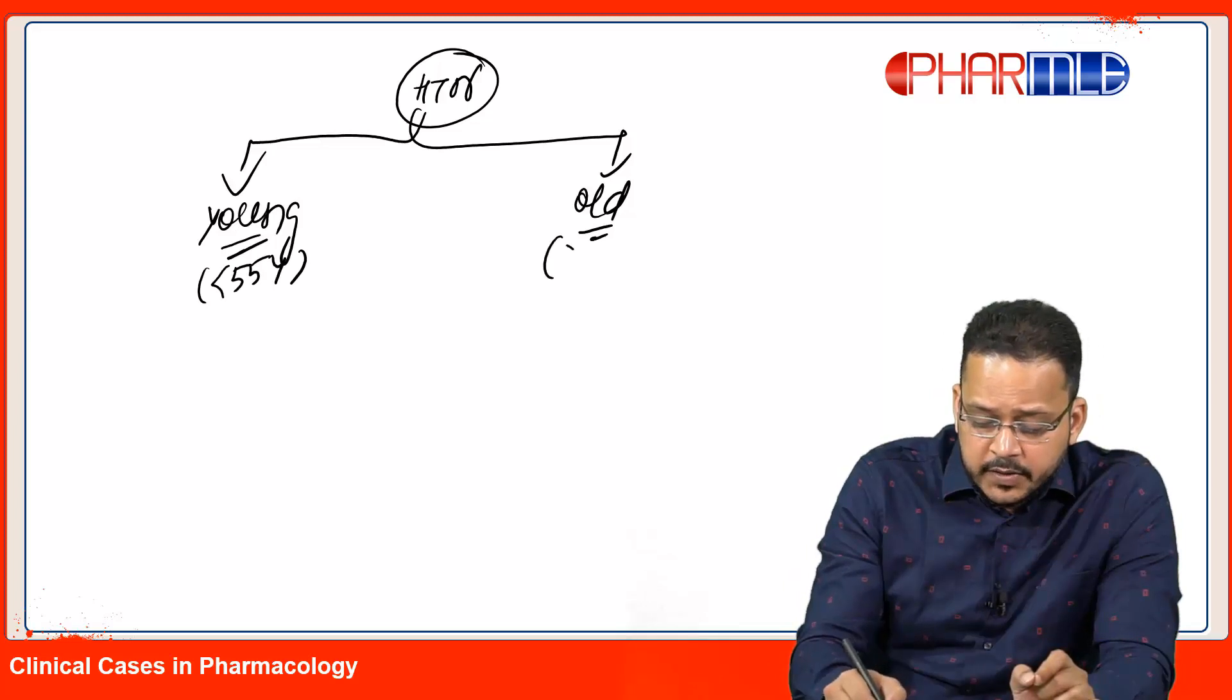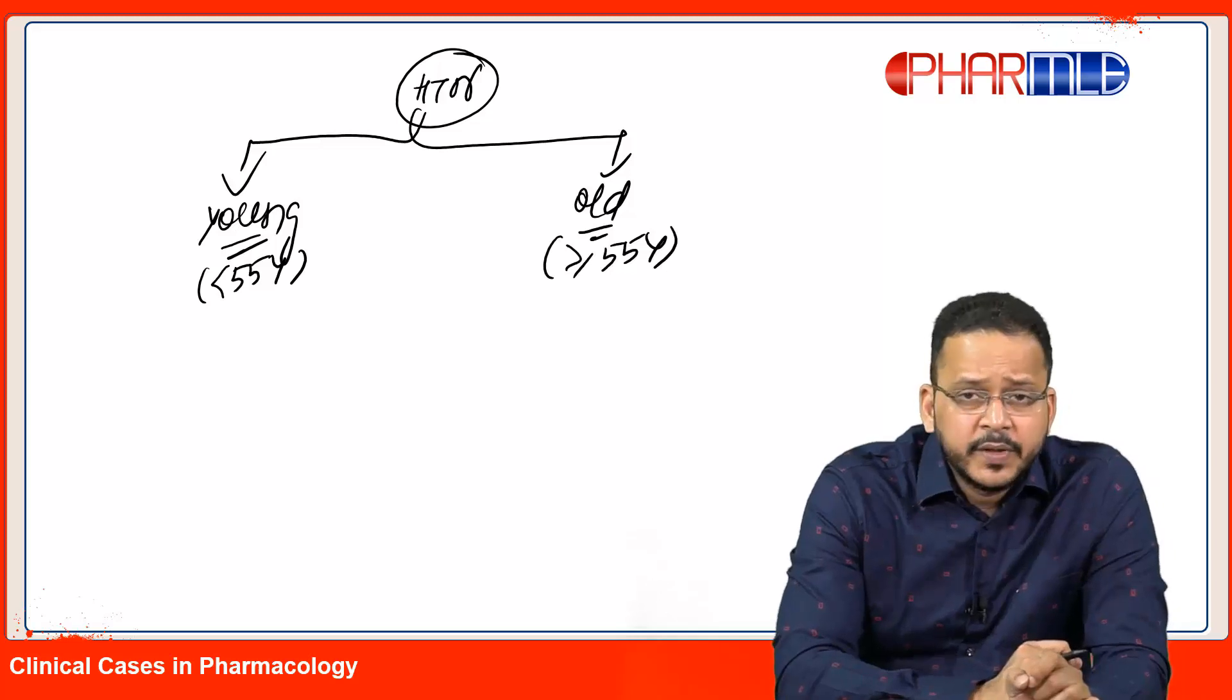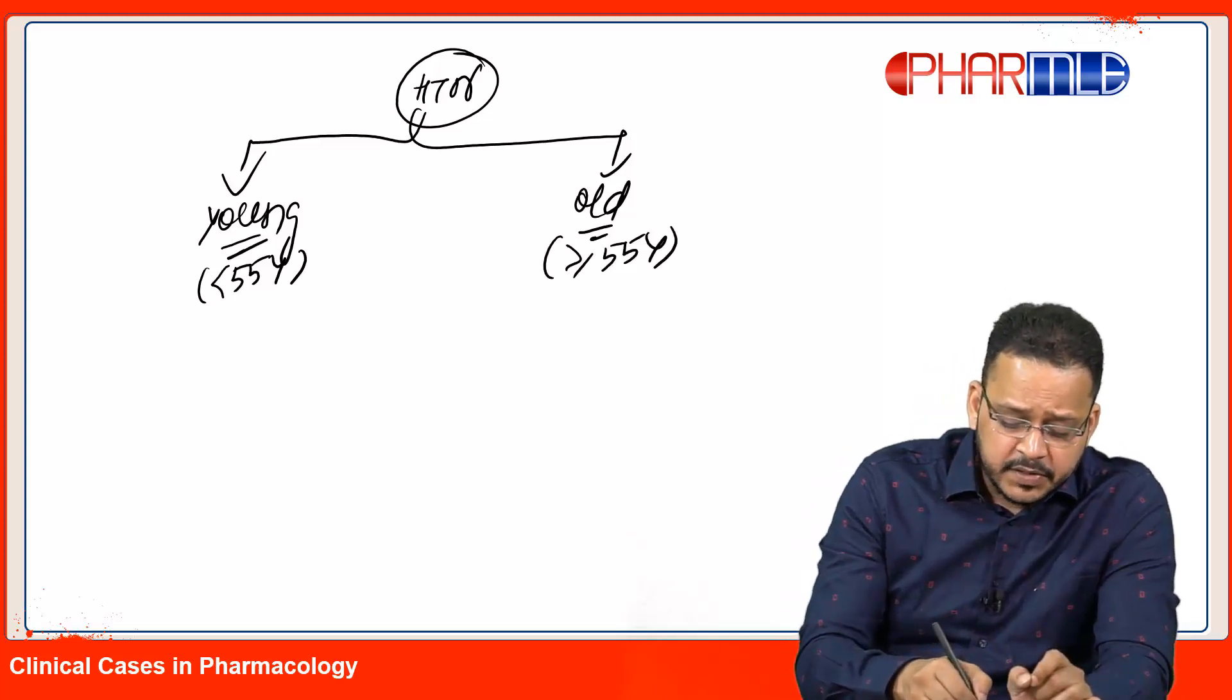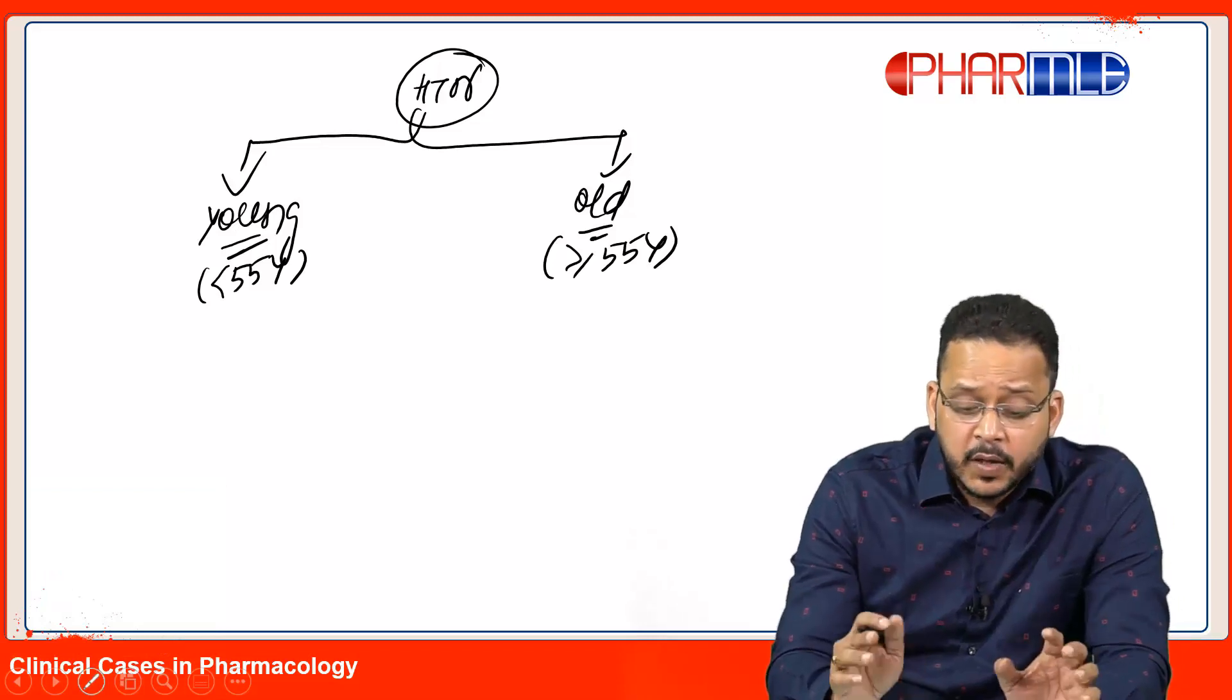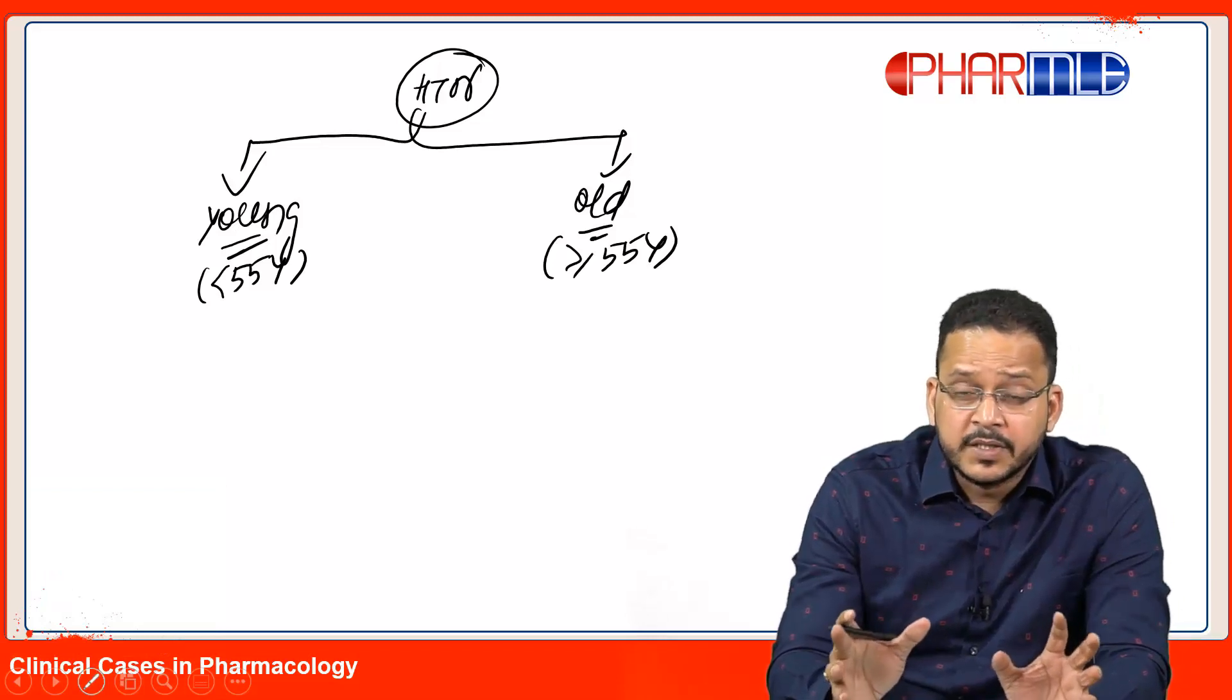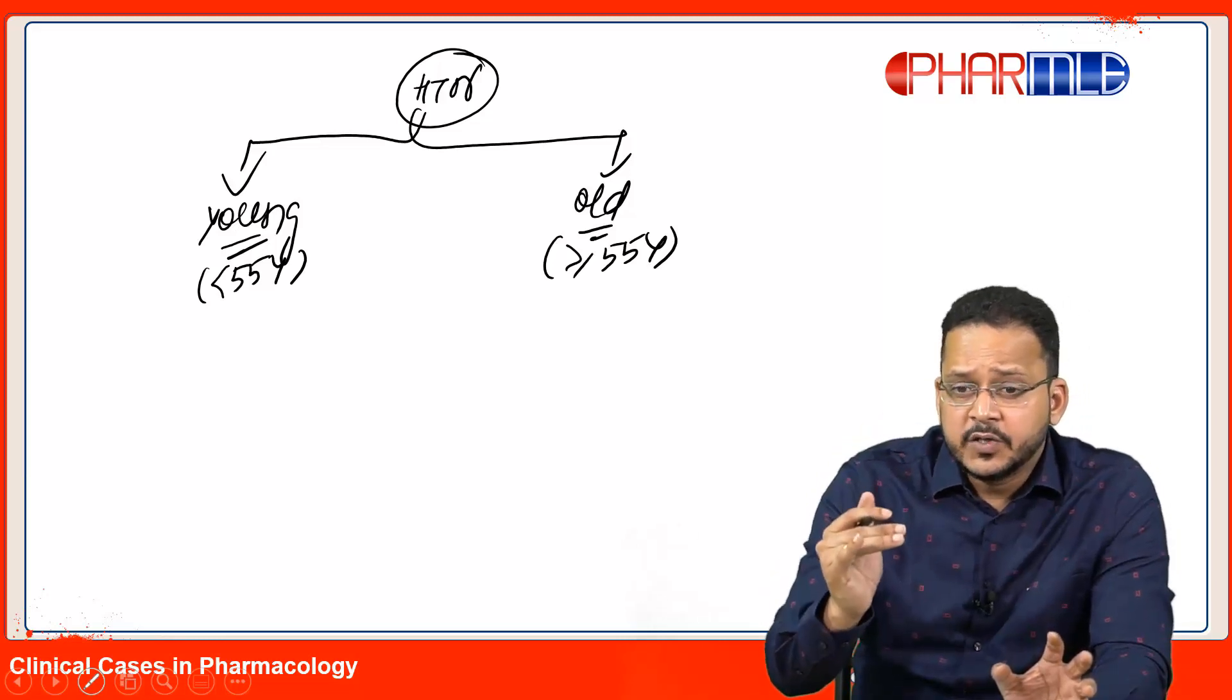Old age is 55 years or more. Remember, the basic difference in these two age groups and why I have different drugs - what is different is the level of renin. In one age group renin is high, in another it is low.